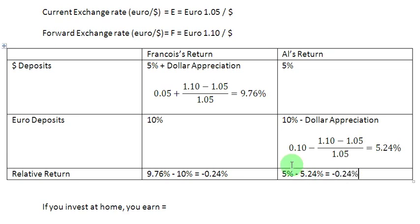What we observe is that since the relative return for Mr. Francois and Mr. Al is the same — 0.24 percent — they may as well invest in their respective countries. There is nothing extra to be gained by taking the trouble to invest abroad and negotiate currency fluctuations.